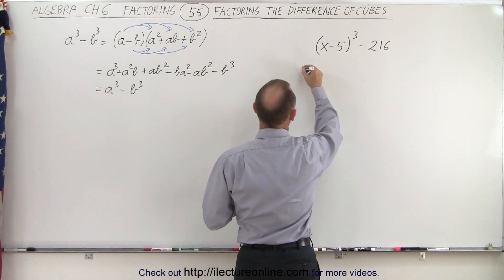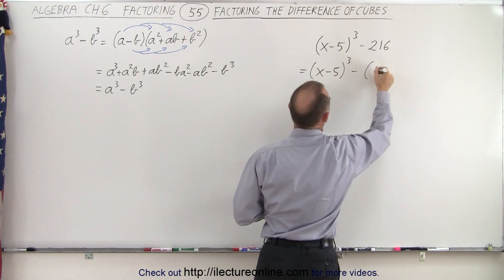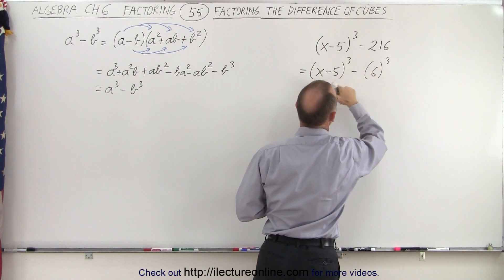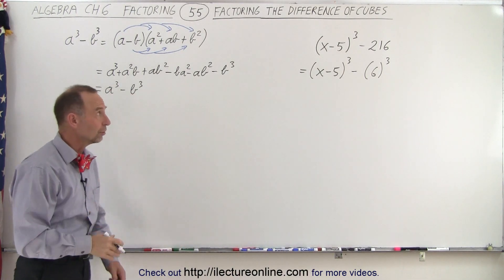And if we write it like this, the quantity x minus 5 cubed minus 6 cubed, now we can clearly see that yes indeed, it is the difference of cubes. 6 cubed is indeed 216.